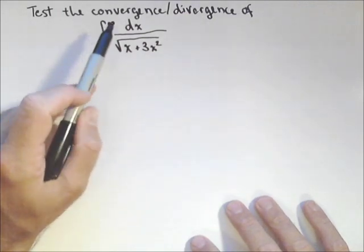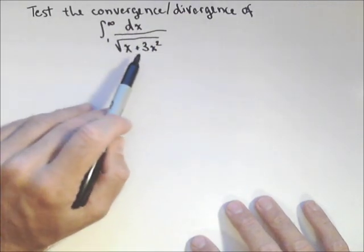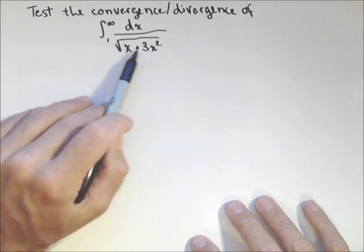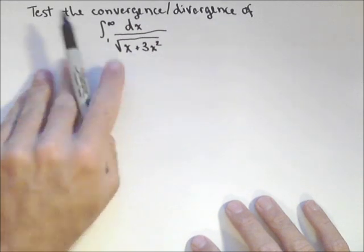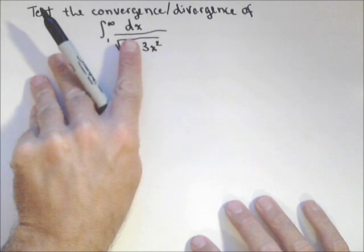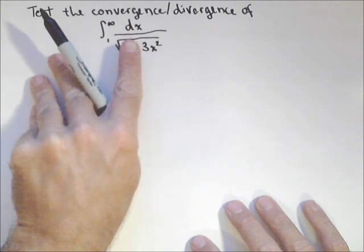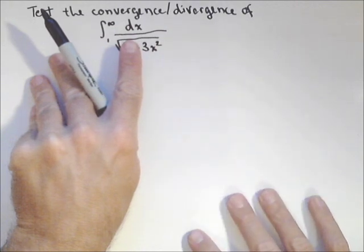So in looking at this one, first thing I want you to notice is underneath this radical, we have a polynomial. Polynomials are dominated by their lead terms, so we can forget about the x for a little bit. So our goal would be to compare this maybe to one over square root of three x squared.